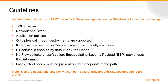Virtual in-path deployments are not supported. In RiOS 9.0 or later, IPsec secure pairing and the secure transport service are mutually exclusive. The secure transport service is enabled by default on steelheads. Before you enable IPsec secure pairing on the steelhead, you must disable the secure transport service. Flow statistics collectors such as NetFlow can collect encapsulating security payload packet data flow information. Lastly, steelhead must be present on both the endpoints of the path. Traffic is double encrypted only when both secure transport and SSL secure pairing are enabled.